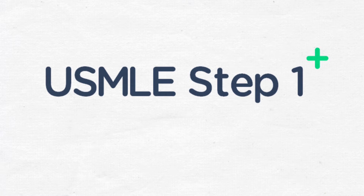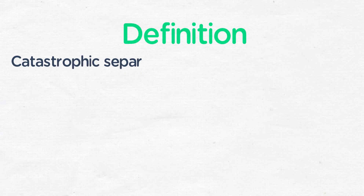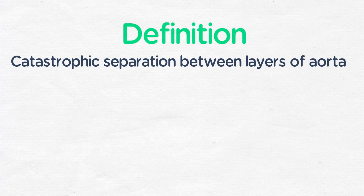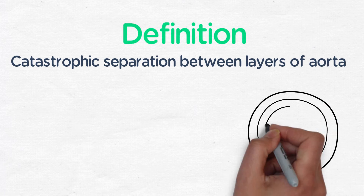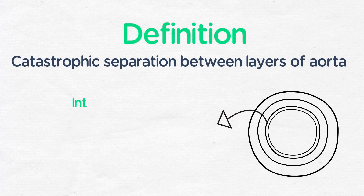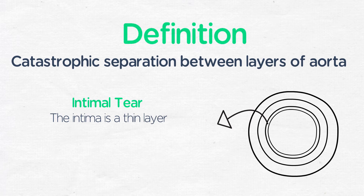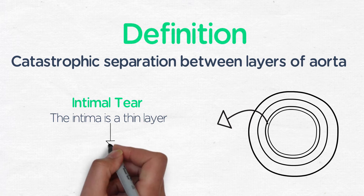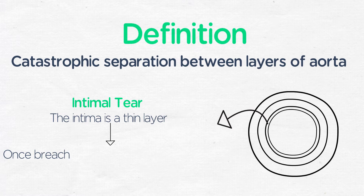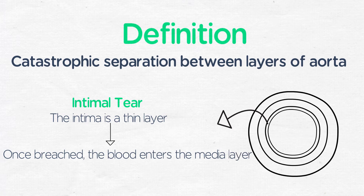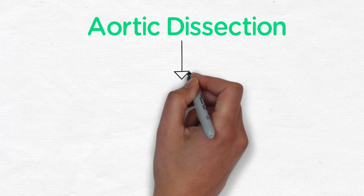I'm Dr. Bernstein and we're going to be discussing aortic dissection. Aortic dissection is a catastrophic separation between the layers of the aorta. Classically, the initial insult is an intimal tear. The intima is a thin layer and under the high pressures and pulsatile forces of aortic blood flow, once it is breached, the blood enters the media layer and essentially jackhammers a new lumen.